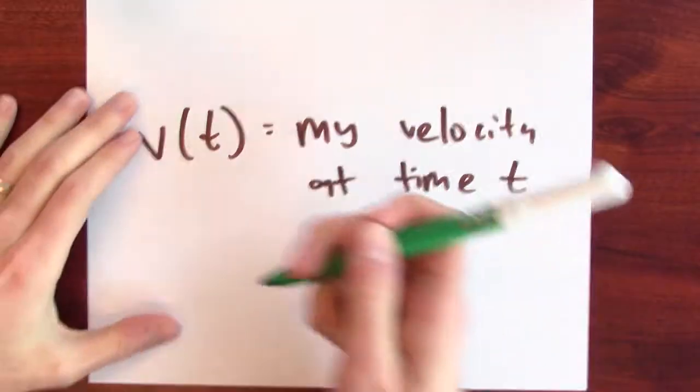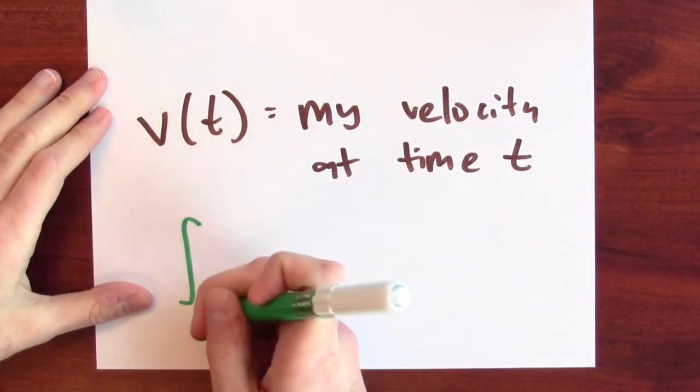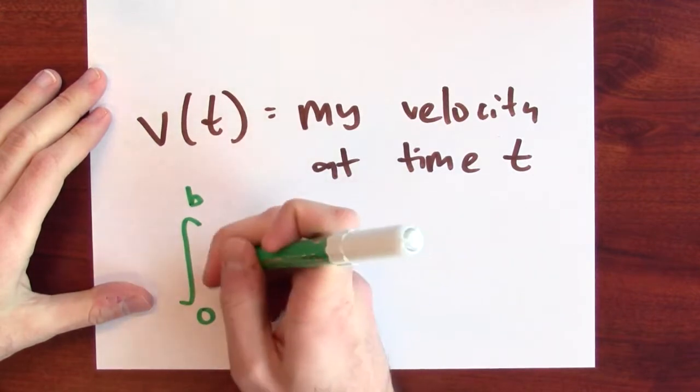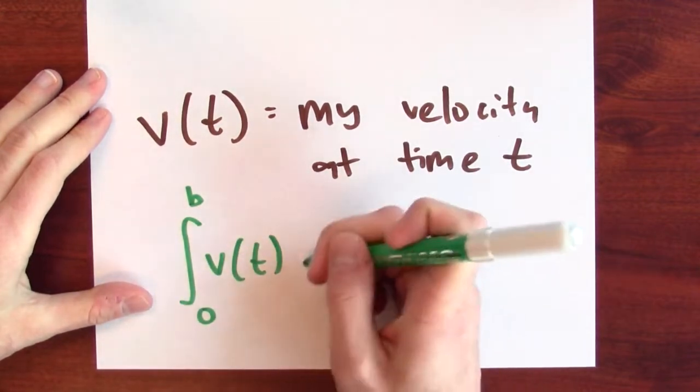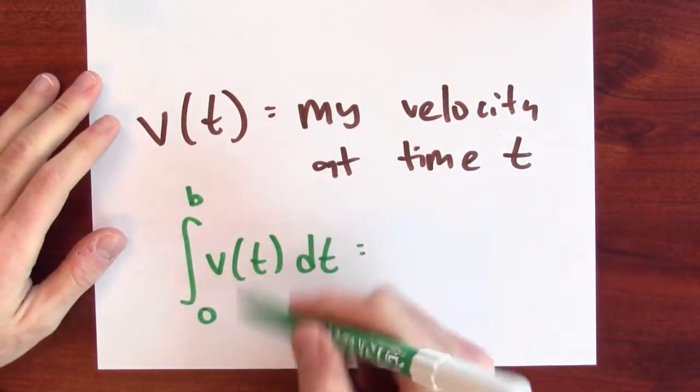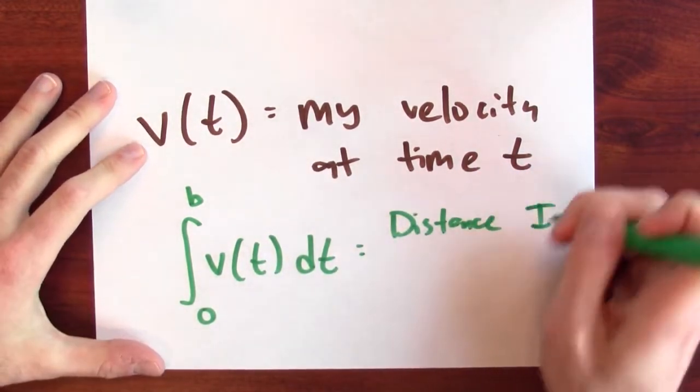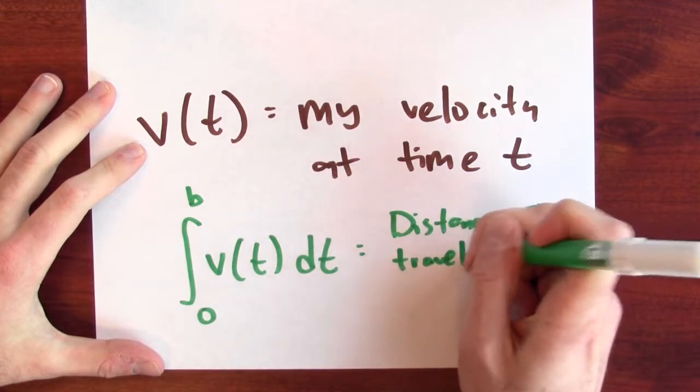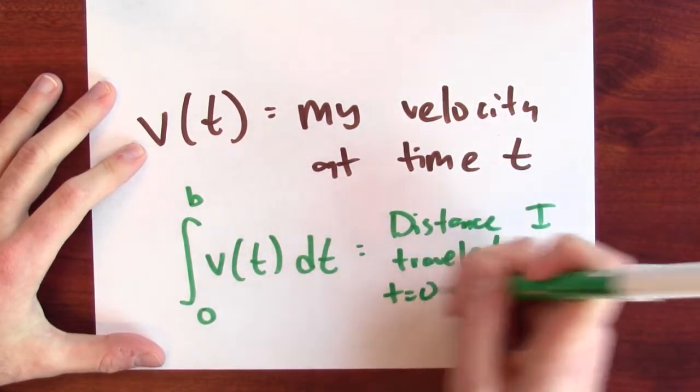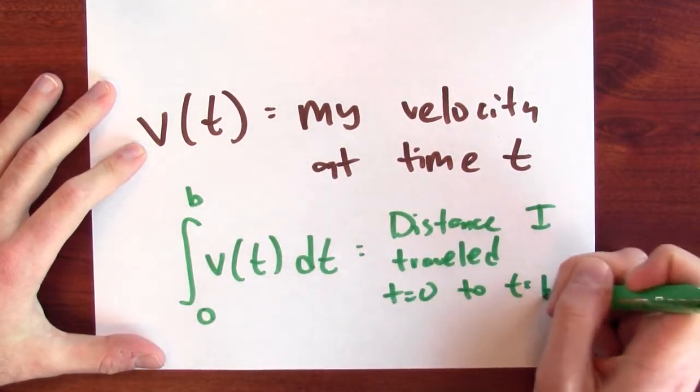Now physically, what does the accumulation function of velocity mean? Well, that accumulation function is the integral from 0 to b of v of t dt, and this is really the distance that I've traveled from time 0 to time b.